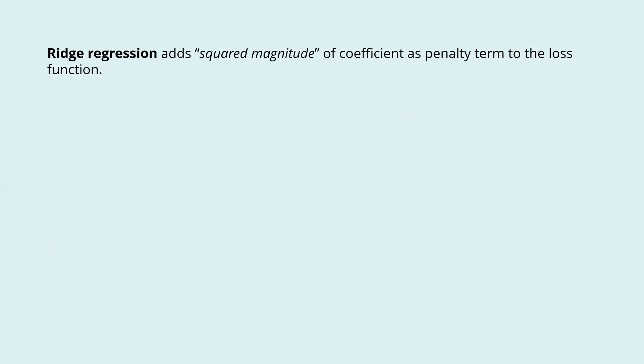Ridge regression adds the squared magnitude of coefficients as a penalty term to the loss function. Here, the highlighted part represents the L2 regularization element.